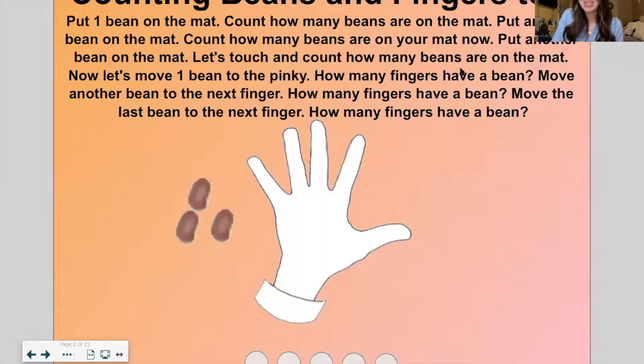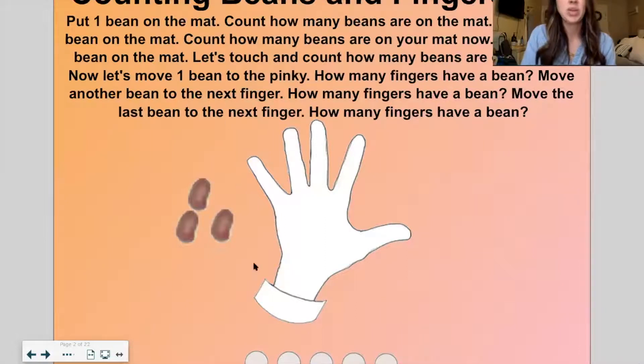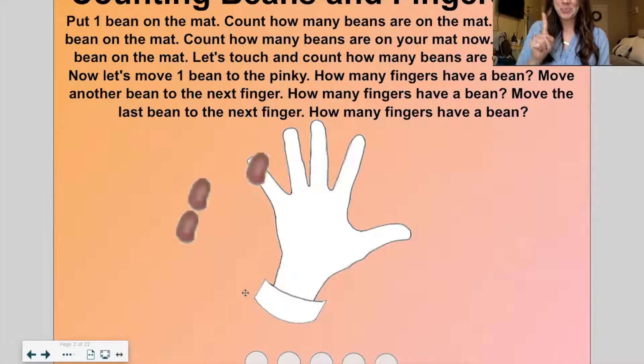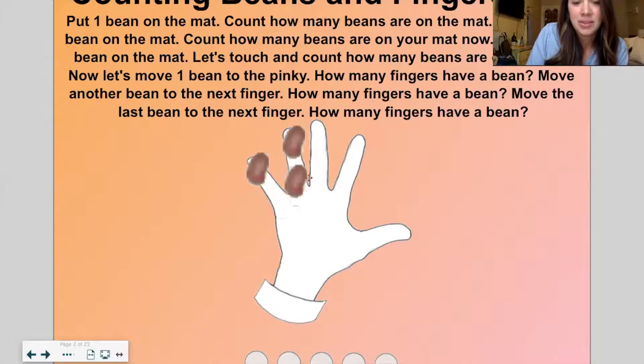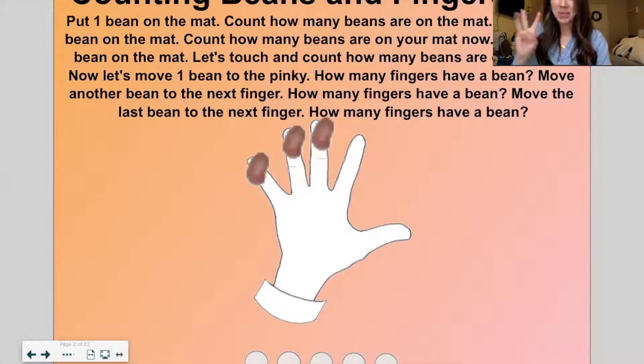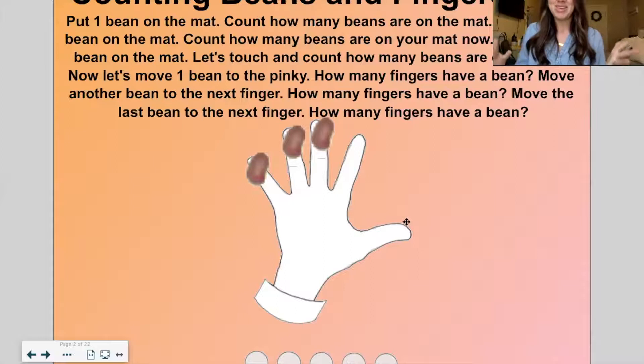So first, we're going to do some counting together with counting beans and fingers to three. So I'm going to put one bean on the mat. How many beans are on the mat? One. You got it. Now let's put another bean on the mat. And by the mat, I mean my hand. So you can put it on your hand, or you can watch me put it on here. How many beans on the mat now? Two. You got it. Let's do one more. How many beans on the mat now? Three. Let's touch and count now. Some of us are able to quickly count that with our eyes, but some of us need to touch and count. So let's do that together. One, two, three. Yes. Three beans on the hand. Three fingers have a bean, and there are three total beans on the mat. You got it.